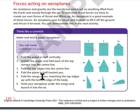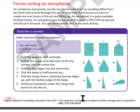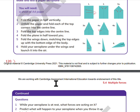Step 5: fold the wings down, matching the top edges up with the bottom edge of the body, like Step 5A and Step 5B. Step 6: hold your airplane under the wings and launch it into the air.